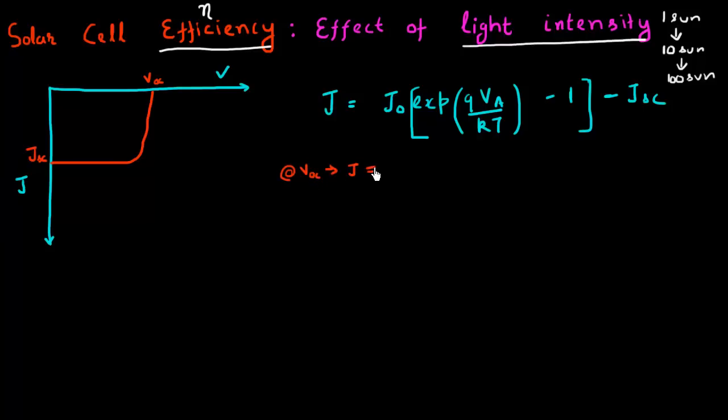So I can apply V to be VOC and plug the total current to be zero. So I'll have this condition at open circuit voltage. And basically I can then express my open circuit voltage in terms of this short circuit current and other parameters.